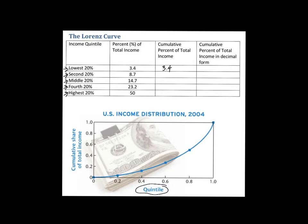If I take that first 20 percent and add in the next 20 percent — that's 3.4 plus 8.7 — I get 12.1 percent. Adding the next 20 percent, that's 14.7 added to the 40 percent I already have, giving 60 percent of the population with 26.8 percent of income. Then adding the next group gives 50 percent of total income, and finally adding the last 20 percent gives 100 percent altogether.